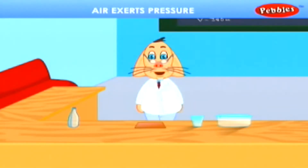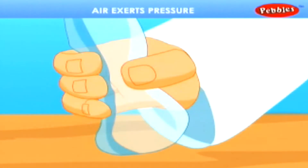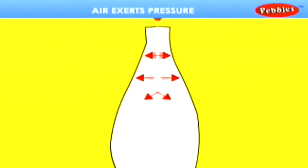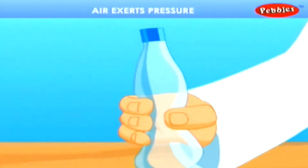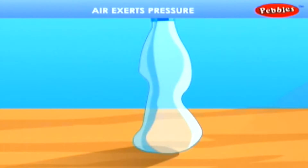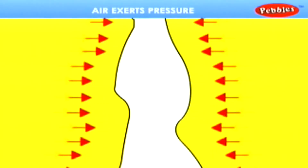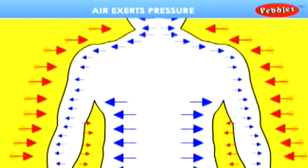Air exerts pressure. Air acts on everything and presses in all directions. If you squeeze an empty plastic bottle and then release it, the bottle will regain its shape. This is because air enters the bottle and pushes the sides out again. If you squeeze the bottle and then place the cap on, the bottle will not take up its original shape. This is because the air outside the bottle is pressing the sides in. Air presses on our body too. Our body does not get crushed due to air because the body too contains air.